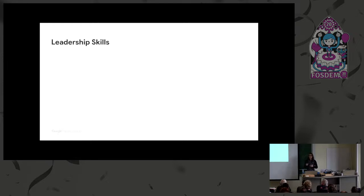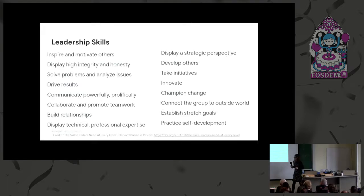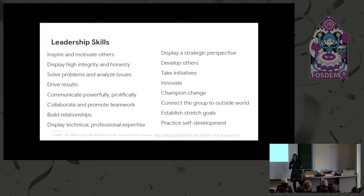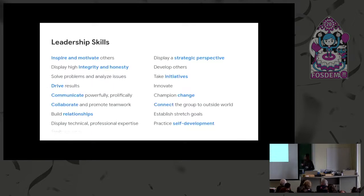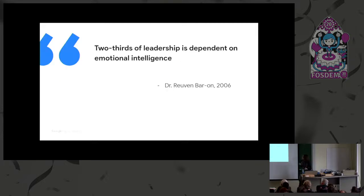So while leaders do what they do, what kind of skills do they have to use? Research shows there's a lot. You inspire and motivate others, display integrity and honesty, communicate, collaborate. What you realize is that whether you are running a company or working in open source, to lead means you're not really relying on those technical skills and cognitive abilities — you're actually relying on soft skills. Research is showing that two thirds of leadership is actually reliant on emotional intelligence, and that's something we don't talk about very much in open source.